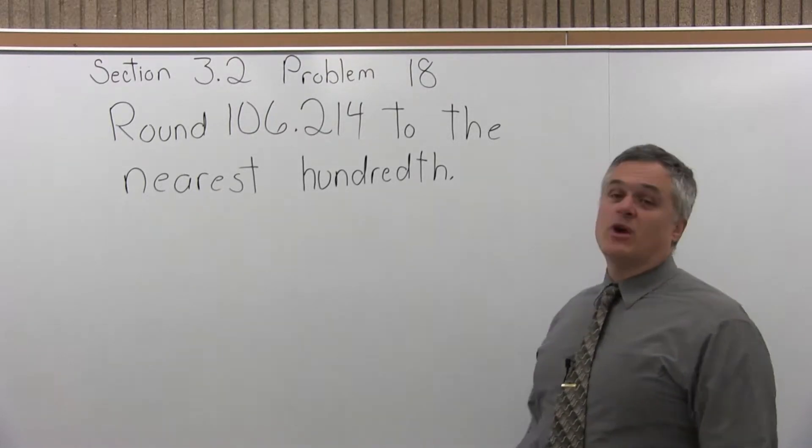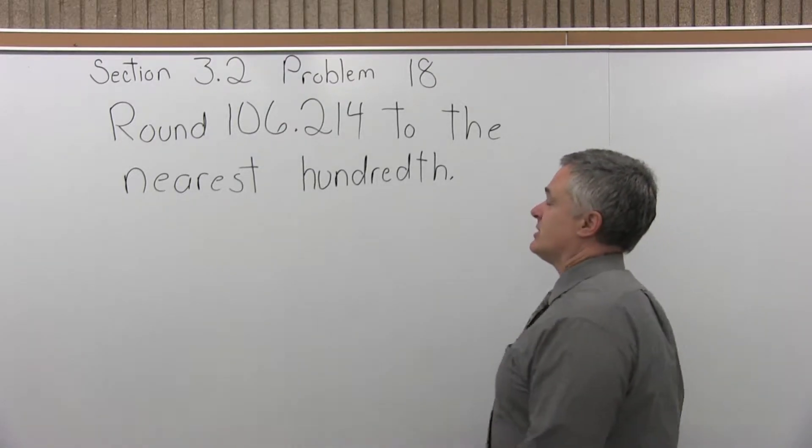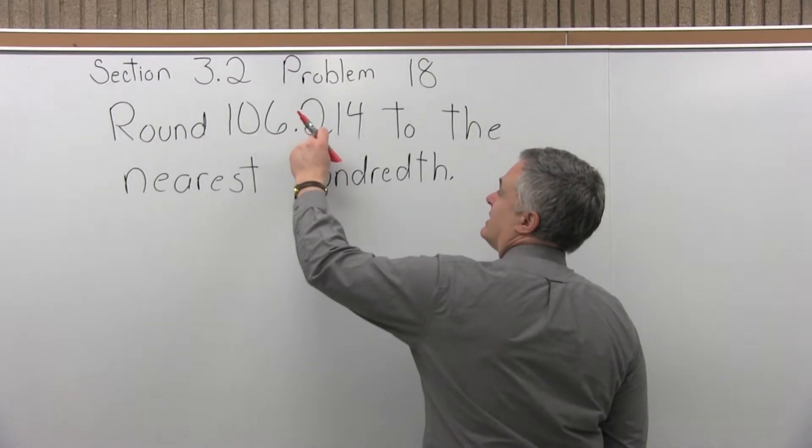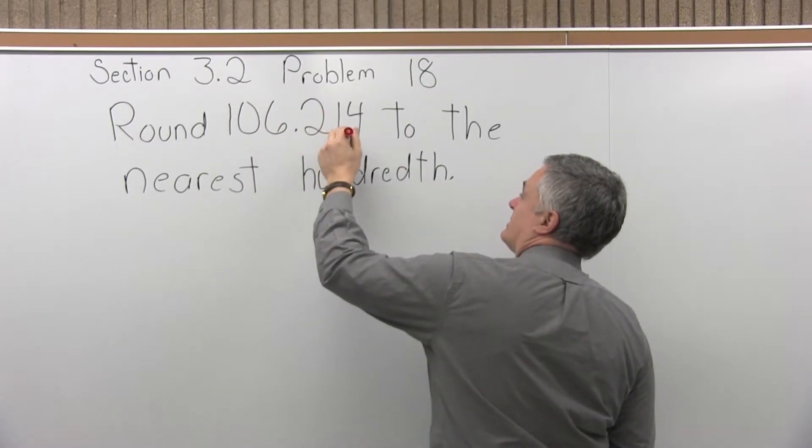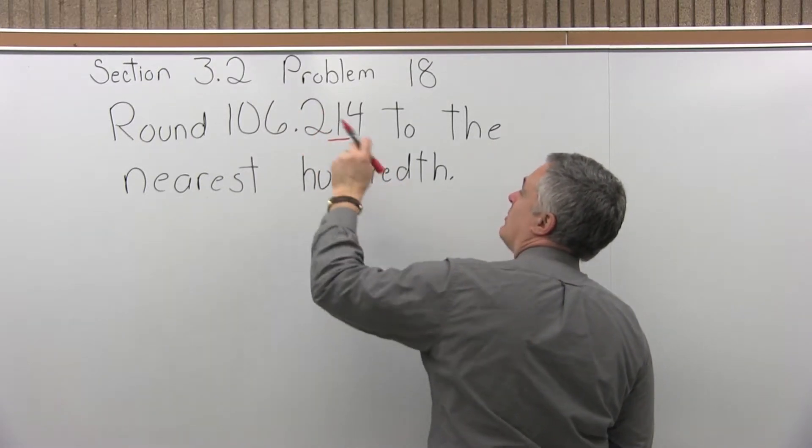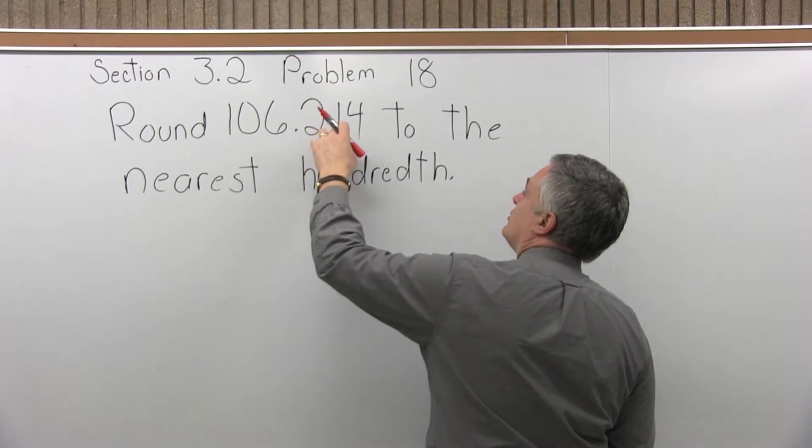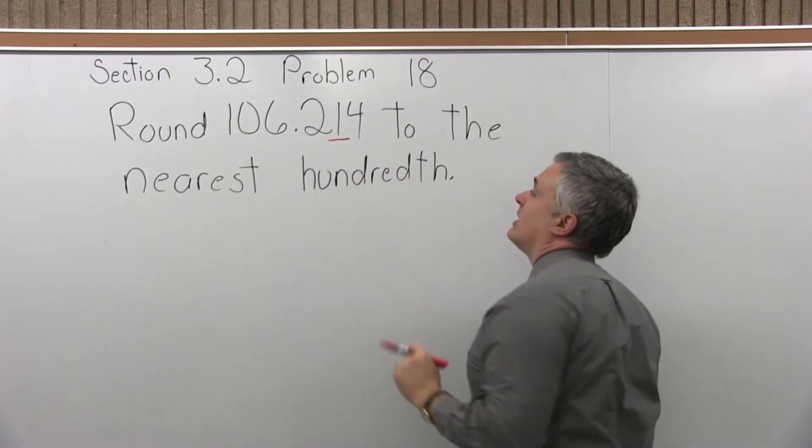So first, let's figure out which digit is in the hundredth position. After the decimal, the next one is tenths, after that is hundredths. So for this problem, 106.214, the one is in the hundredth position.